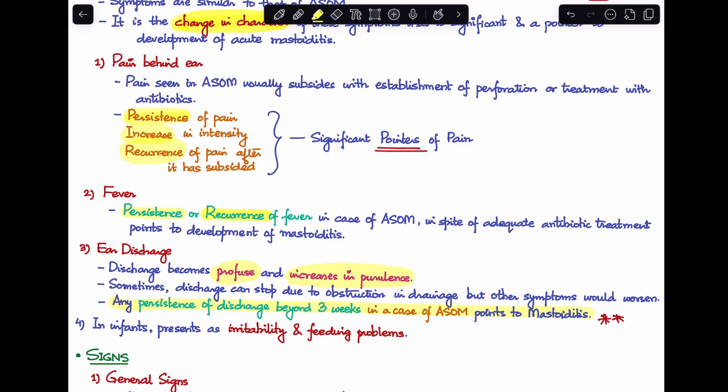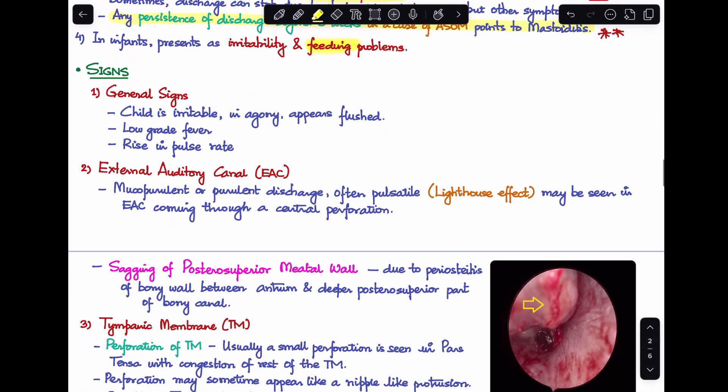Last symptom: this is more common in children, but if seen in infants they will present as irritable and with feeding problems. Next, the signs you'll see. In terms of general signs, the child will be irritable, in agony, appear flushed, with low grade fever and rise in pulse rate.